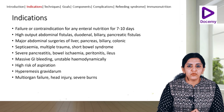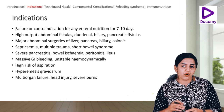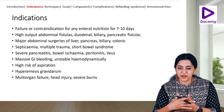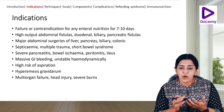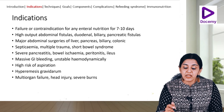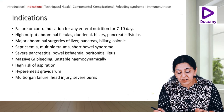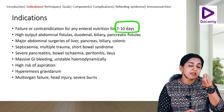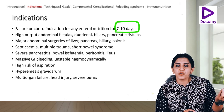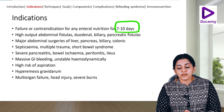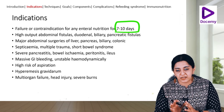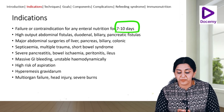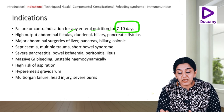What are the indications for TPN? Why feed the patient via IV route? The first indication is failure or contraindication of any enteral nutrition for seven to ten days. Other indications include high-output abdominal fistulas - duodenal, biliary, pancreatic fistulas - where food leaks out through fistulas making gut feeding pointless.